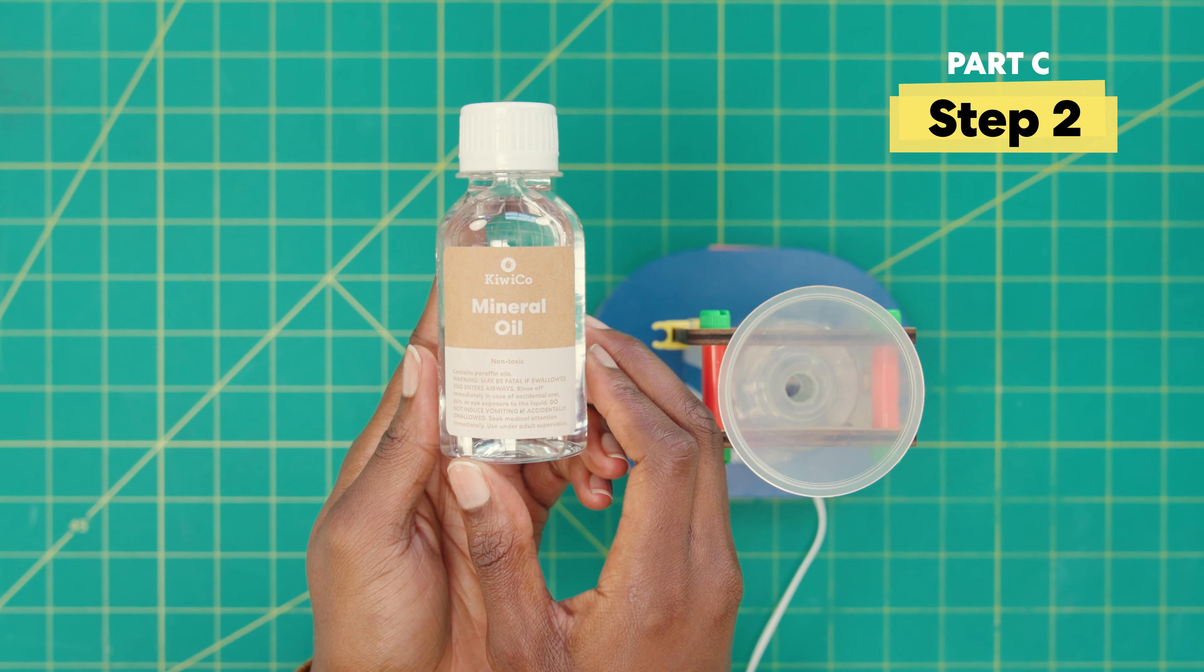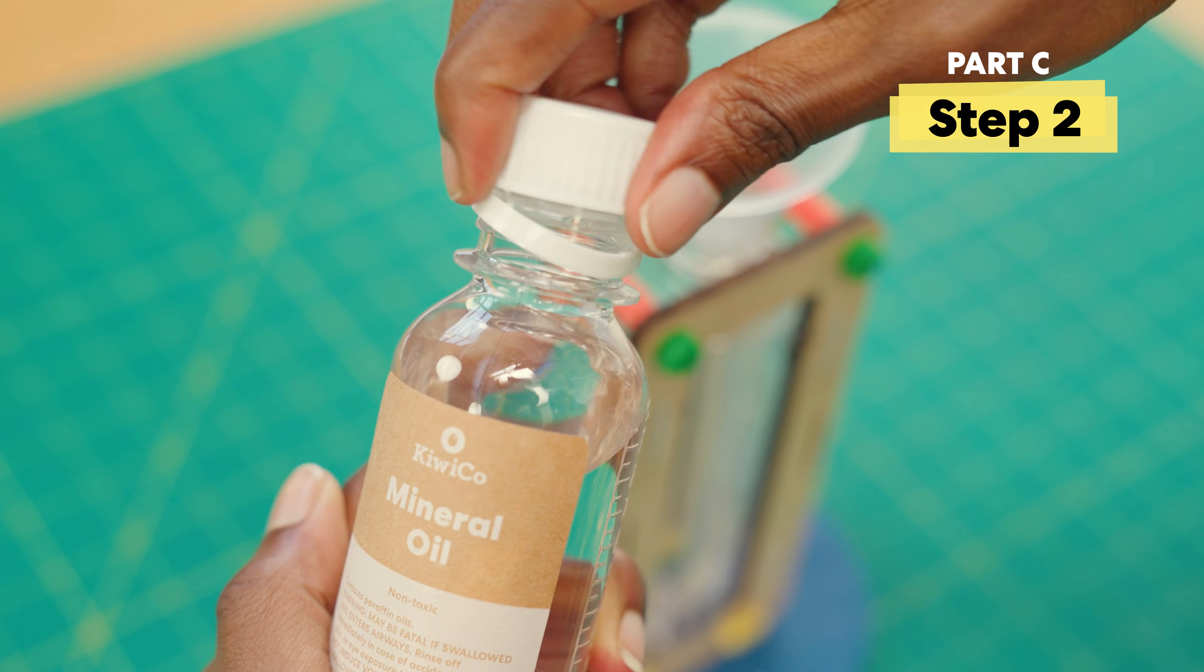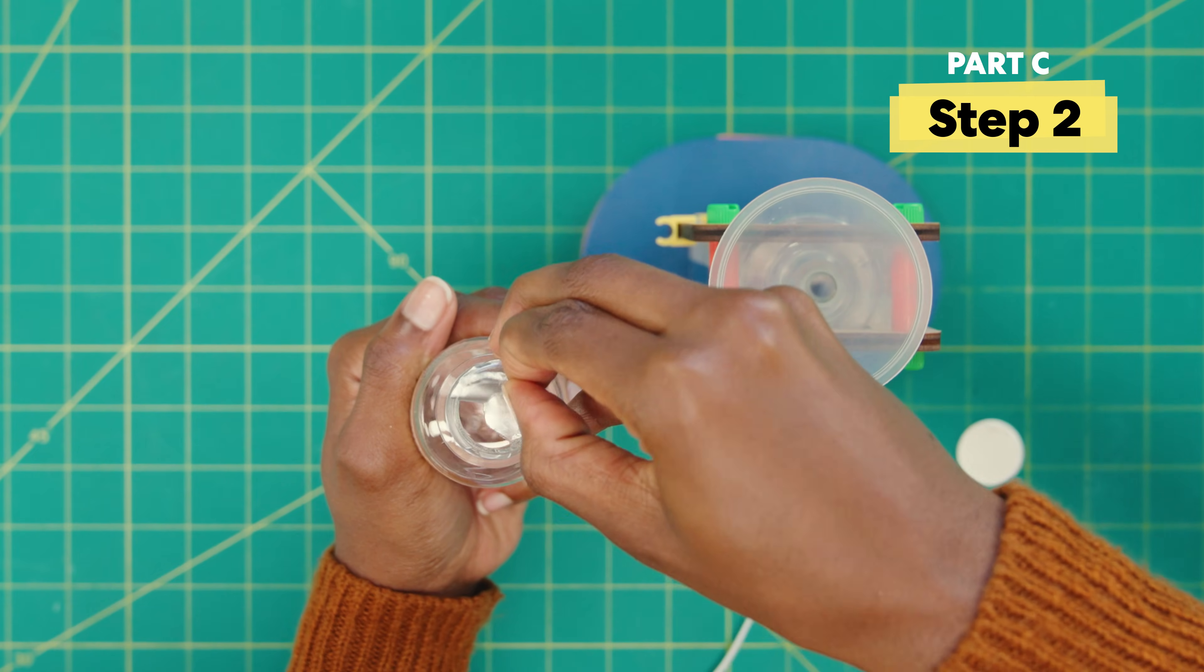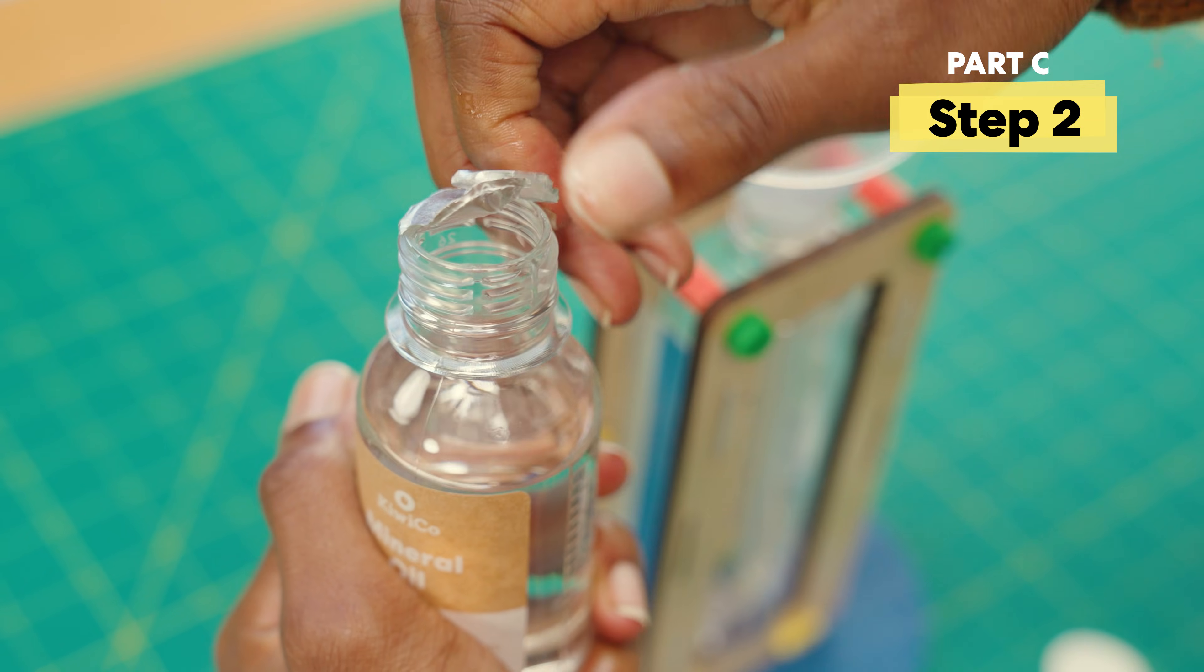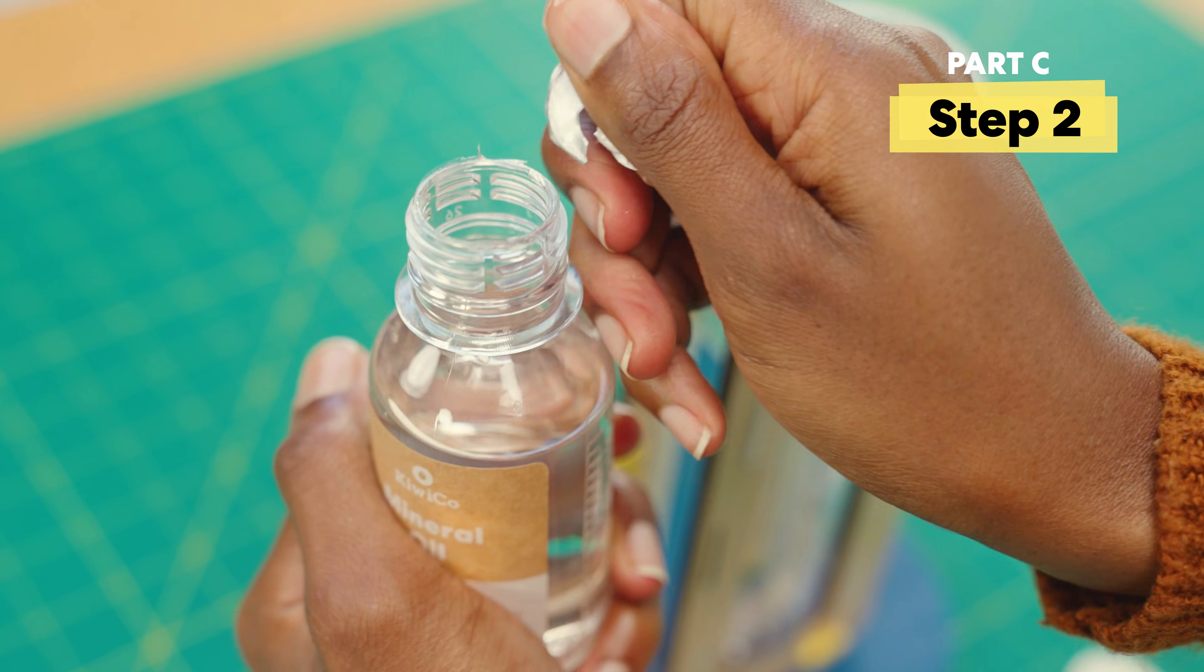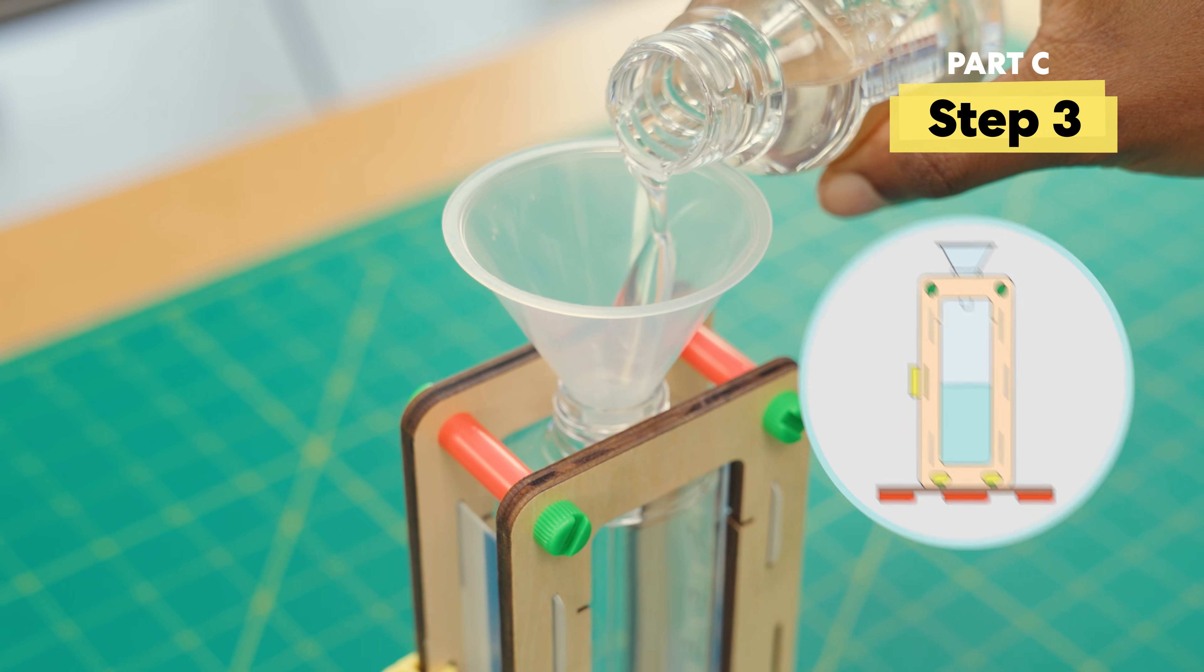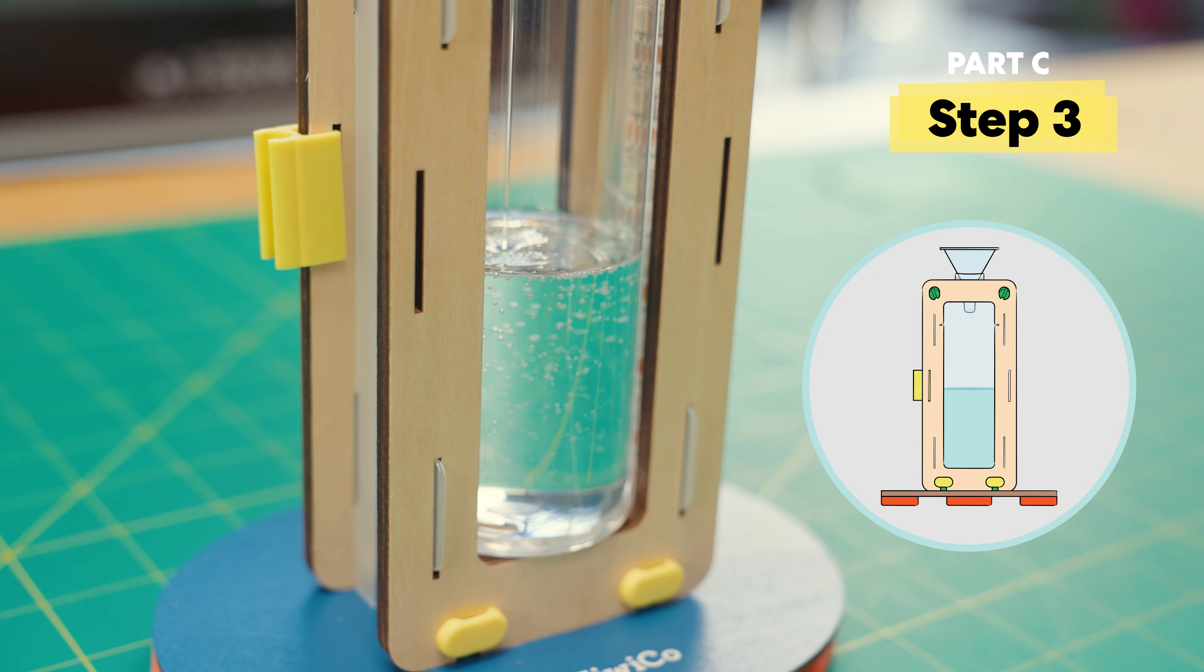Next, unscrew the oil bottle and peel off the sticker. And now, pour the oil slowly into the funnel about halfway. Make sure to go very slow.